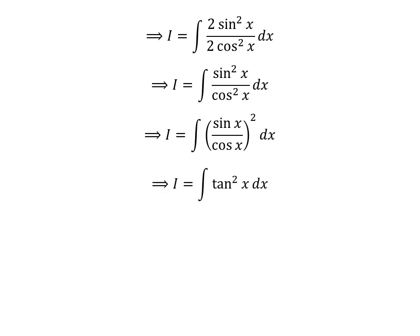We know sine of x upon cosine of x is equal to tangent of x. So I is equal to the integral of square of tangent of x with respect to x. We know the trigonometric identity: square of tangent of x plus 1 is equal to square of secant of x. Therefore, square of tangent of x is equal to square of secant of x minus 1.